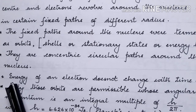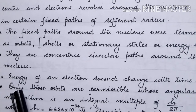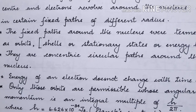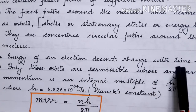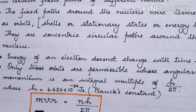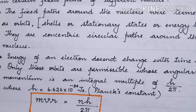We shall now discuss the various postulates of the Bohr model of atom. Orbits are concentric circular paths around the nucleus. As long as an electron moves in a particular orbit, its energy remains the same — the energy of an electron does not change with time. The electron in the K shell has minimum energy, and as it moves further away from the nucleus, the size of the orbit keeps increasing and the electrons in those orbits have more energy.